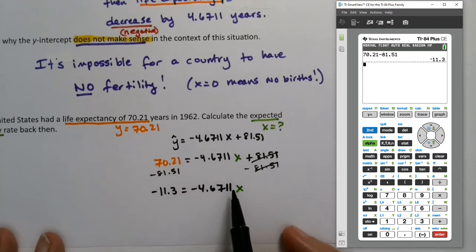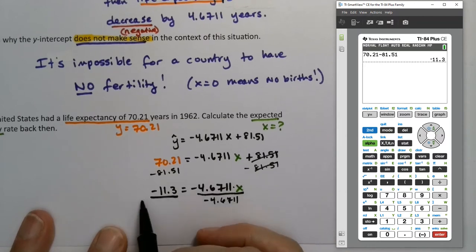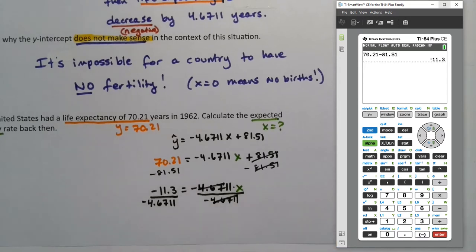This is multiplication right here. Negative 4.6711 times x. And the opposite of multiplying is dividing. So, we want to divide the right side by negative 4.6711. And therefore, we want to divide the left also by negative 4.6711. Because whatever you do to the right, you have to do to the left to keep it all fair and balanced. So, that's this little negative sign down here. By the way, that's not subtraction. It's little negative sign in the parentheses. 11.3 divided by another little negative sign, 4.6711.